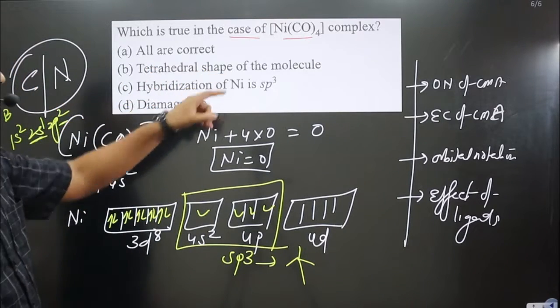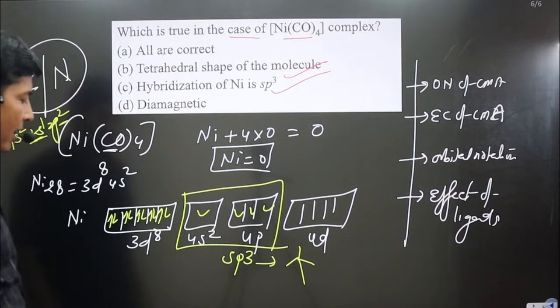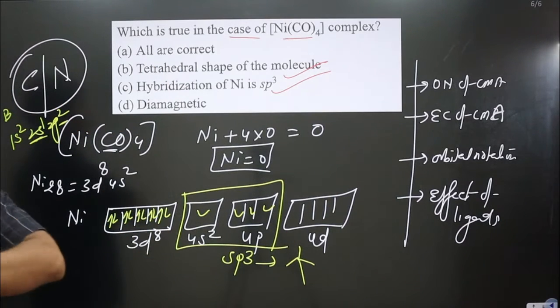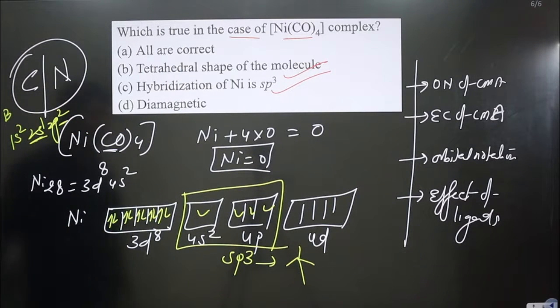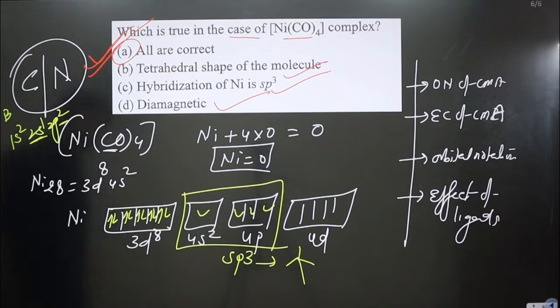We got tetrahedral shape with sp³ hybridization. It does not carry any unpaired electrons—all electrons are paired—so it is diamagnetic by nature. Obviously we can say all options are correct. If you like this video, please share and subscribe to the channel.